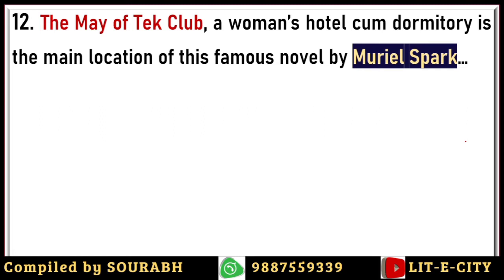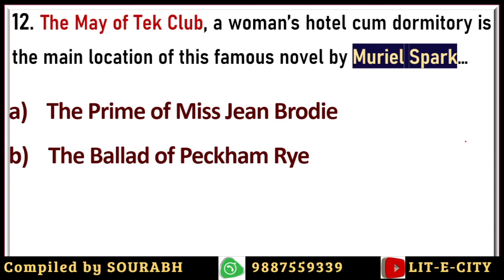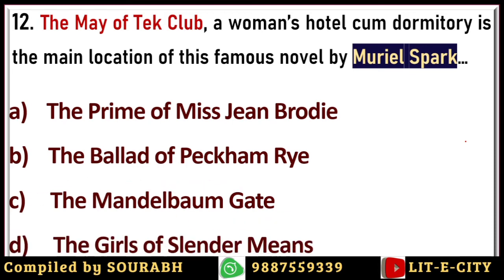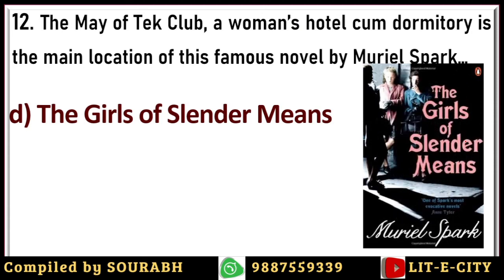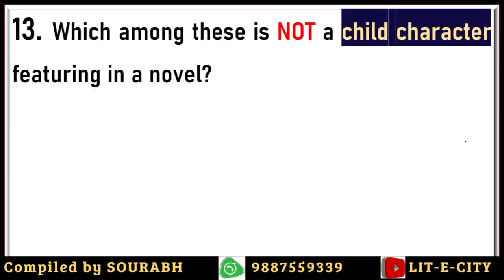The May of Teck Club, a women's hotel-cum-dormitory, is the main location and locus of action of a famous novel by Muriel Spark. Options are The Prime of Miss Jean Brodie, The Ballad of Peckham Rye, The Mandelbaum Gate, and The Girls of Slender Means. Muriel Spark is a very acclaimed writer who presented modern existential and social problems in her works. The correct answer is The Girls of Slender Means, which is set in the May of Teck Club.